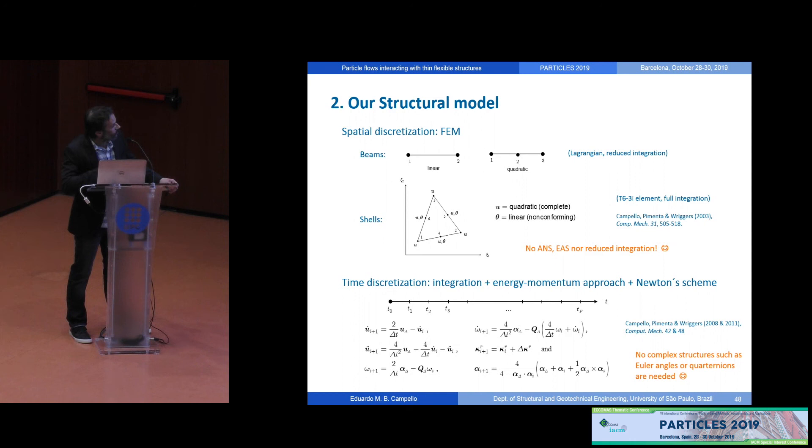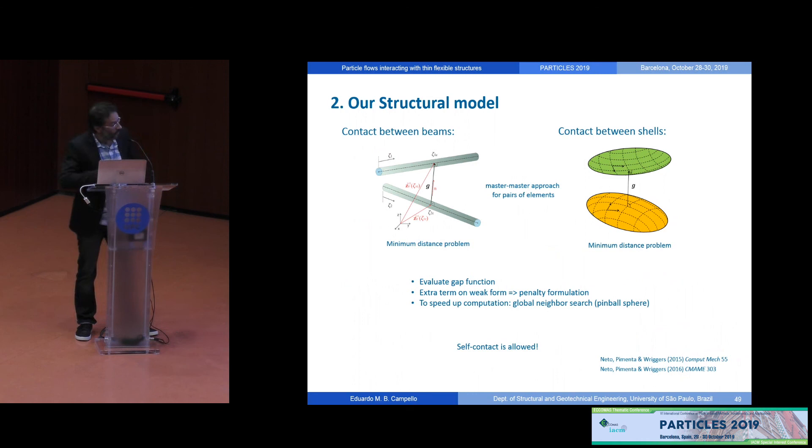For discretization. For the beams, we use standard linear and quadratic Lagrangian elements for the spatial integration, whereas for the shell, we make use of a special element that we have devised a long time ago. This is a triangular element. It's very convenient to mesh complex geometries. The element has the particularity of having a quadratic field for the displacement and a linear field for the rotations. That means that the rotations, they are actually placed only at the mid-side nodes, are incompatible and this incompatibility or non-conformity fully alleviates locking. So we do not need to resort to any assumed strain or enhanced strain or reduced integration with hourglass control to overcome locking. The element is purely displacement-based very simple and can be fully integrated. So time discretization, we perform a collocation scheme following an energy momentum approach embedded within the Newton's iterative scheme. So for the Newton's scheme, we need to linearize the weak form. I won't show this here.